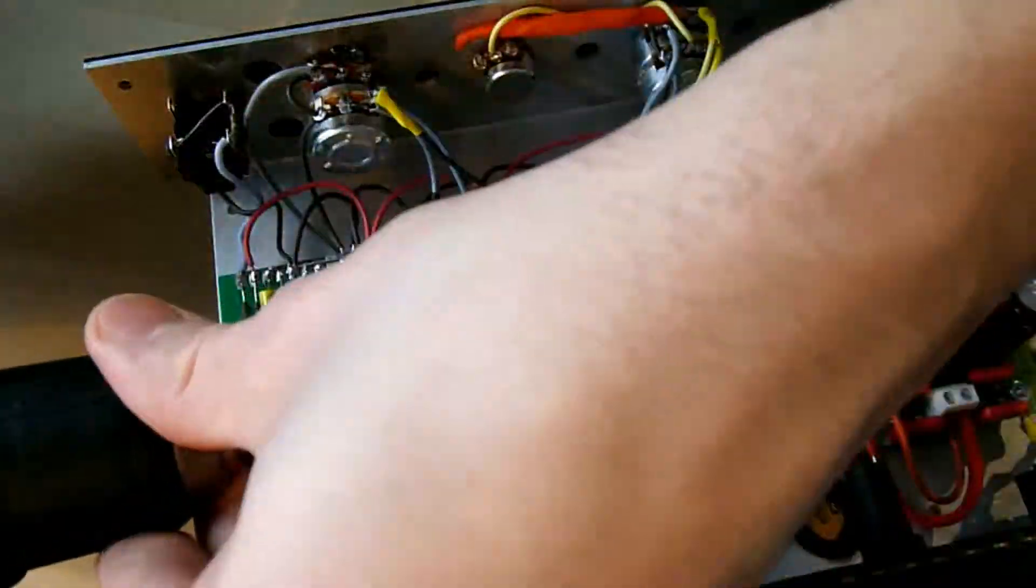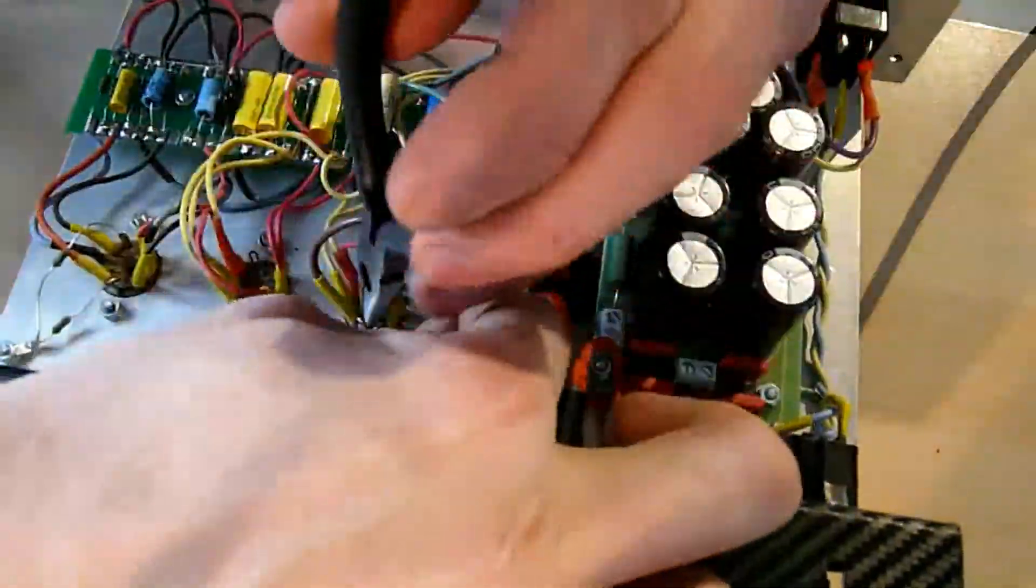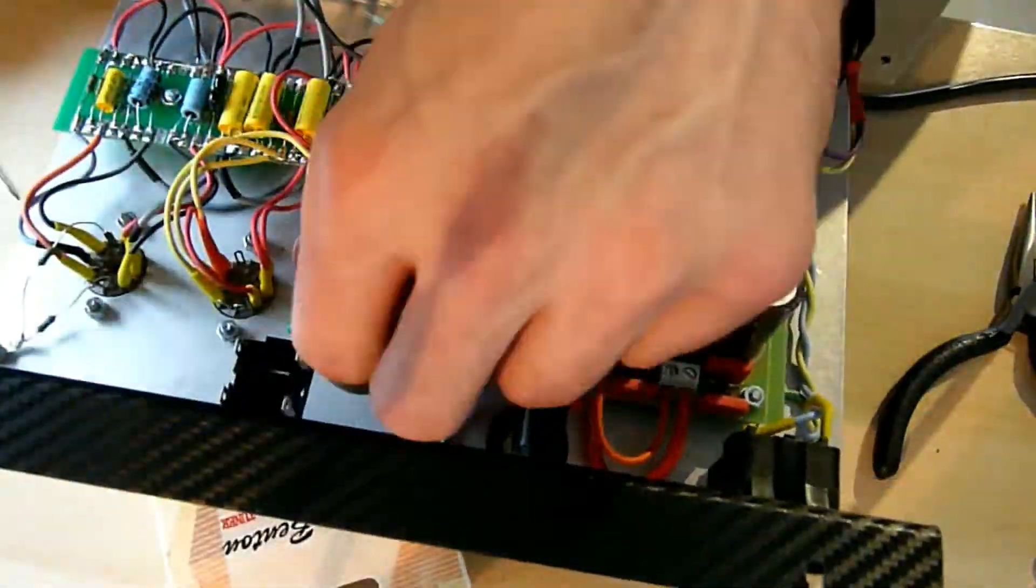This is the final step. We're wiring the power cables for the tubes. On the wire is a brownish coating. You have to scratch it off before soldering.